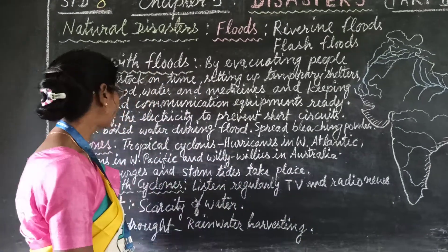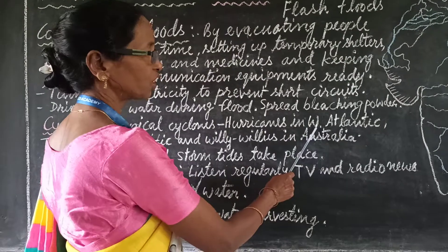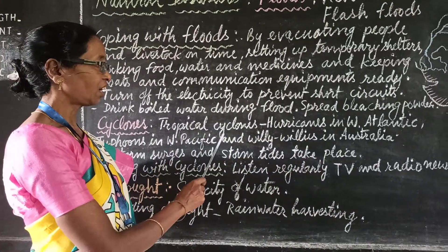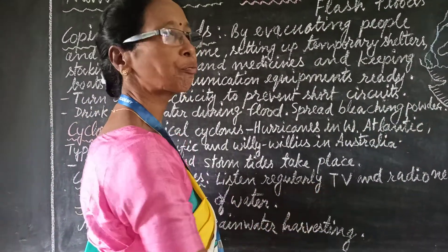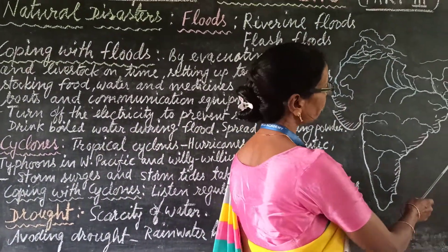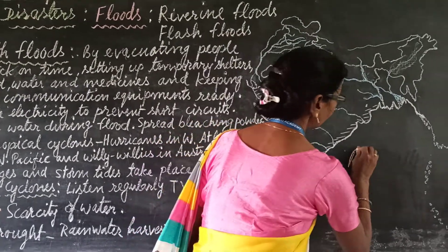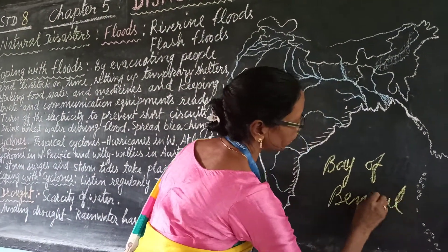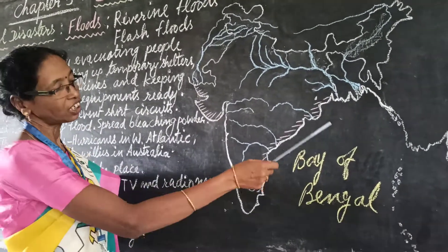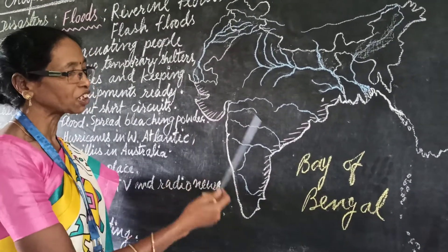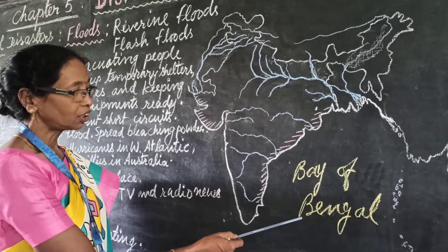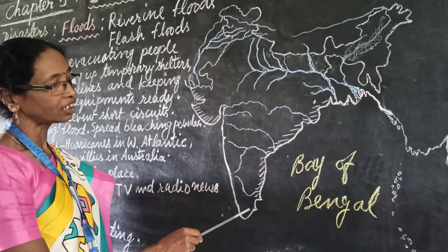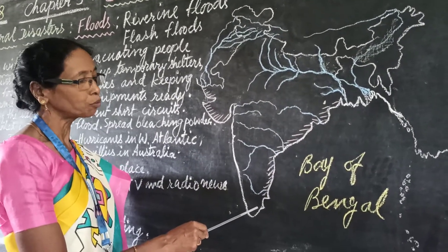Tropical cyclones are known as hurricanes in the western Atlantic, typhoons in the western Pacific, and willy-willies in Australia. In our country, tropical cyclones originate over the Bay of Bengal. When there is depression over the Bay of Bengal, the swirling motion of cyclonic wind carries too much moisture and oceanic water, which suddenly strikes the coastal regions of the southern and eastern coast of India, and that is very destructive.